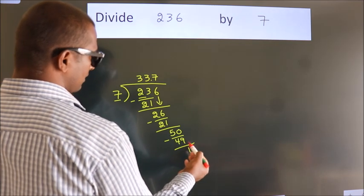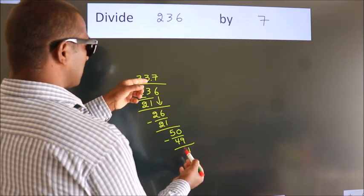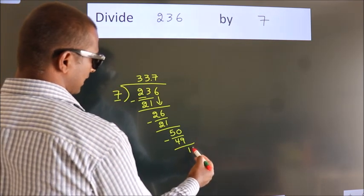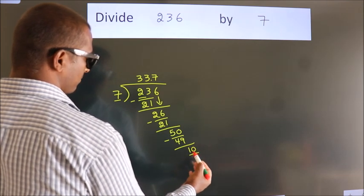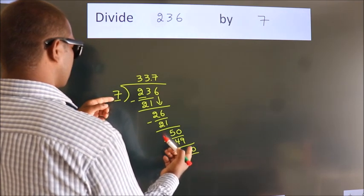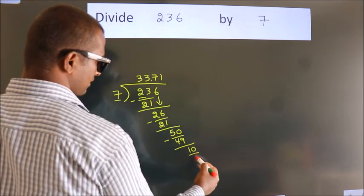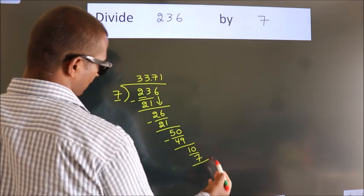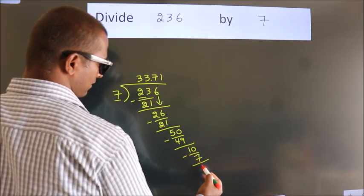After this, we already have the decimal, so directly take 0. So 10. A number close to 10 in the 7 table is 7 ones, 7. Now we subtract. We get 3.